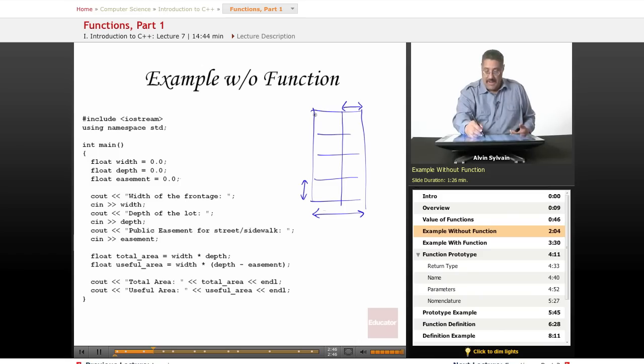You have an easement for a sidewalk and street which takes up some portion of your real estate. When you buy the lot, you're buying the entire bit, but because of the easement for the street, you can only use this portion of it. The total area you're paying for is the width times the depth. The useful area is the width times the depth minus your easement.